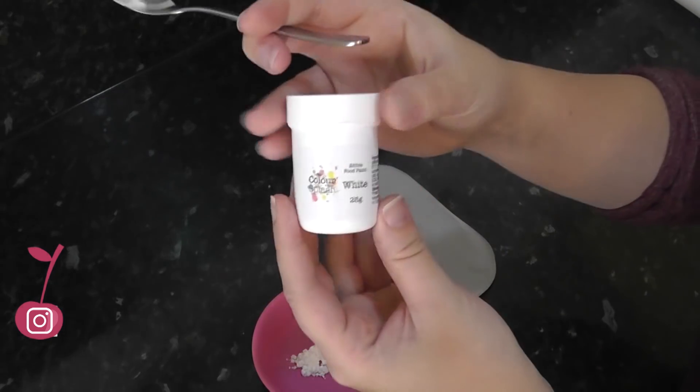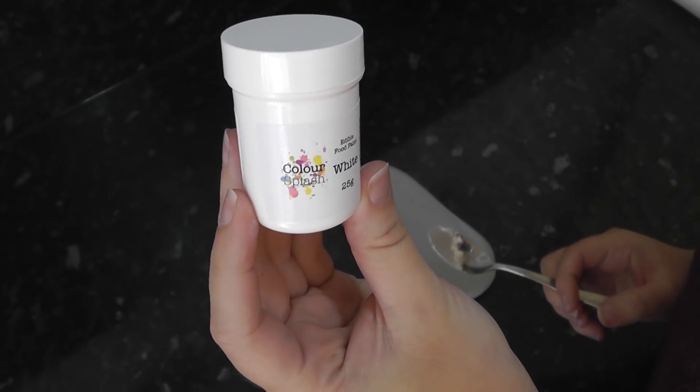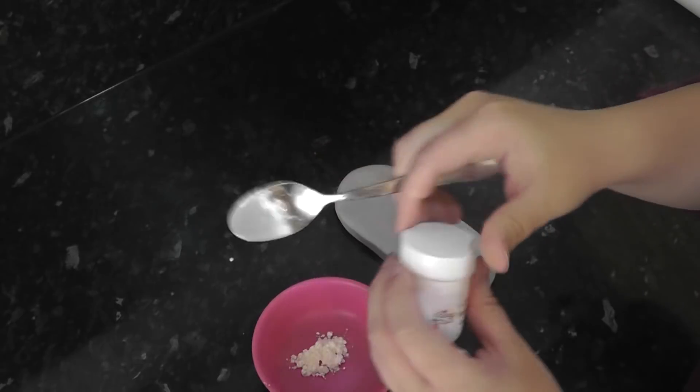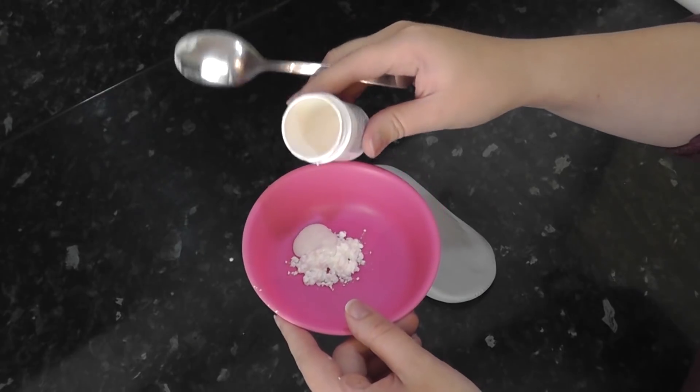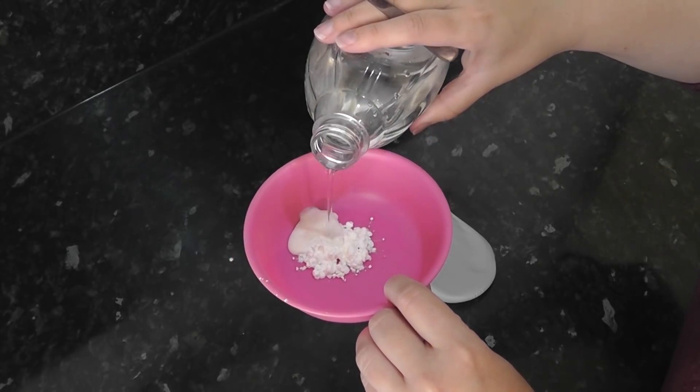Next, you'll want some white paint. I'm using a brand called Colour Splash. Just give it a bit of a shake before opening. This one has an ever so slight lustre look to it. Add in roughly the same amount and a tiny dash of water to make it a more paintable consistency.